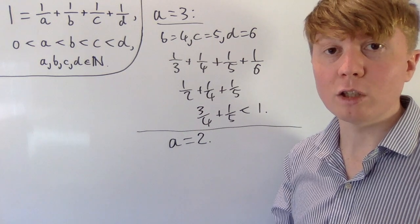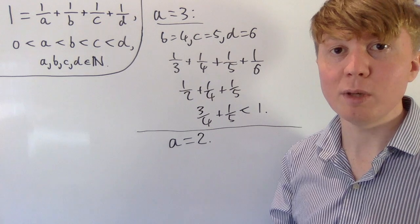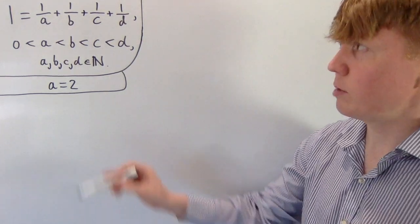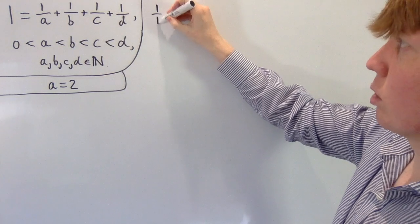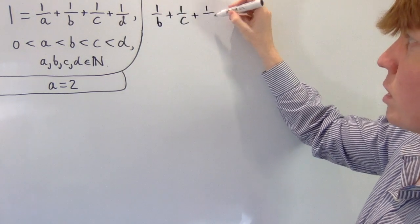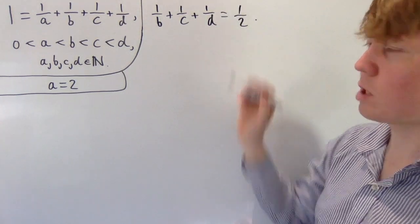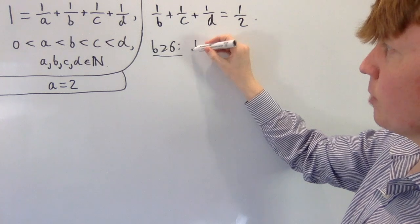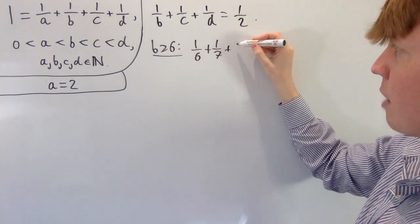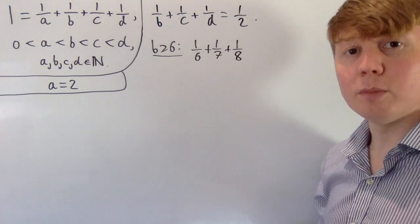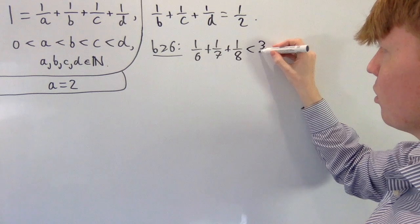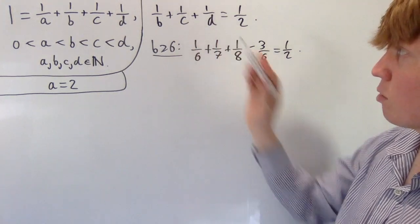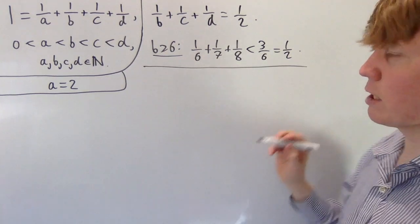Now we'll look at similar arguments for b, c, and d — specifically how large we can make b so the sum can still reach one. Since a equals two, we have one equals one half plus one over b plus one over c plus one over d, which tells us one over b plus one over c plus one over d must equal one half. If we take b greater than or equal to six, the best case scenario is one sixth plus one seventh plus one eighth, which is less than three sixths, or less than one half. So we can rule out b greater than or equal to six.